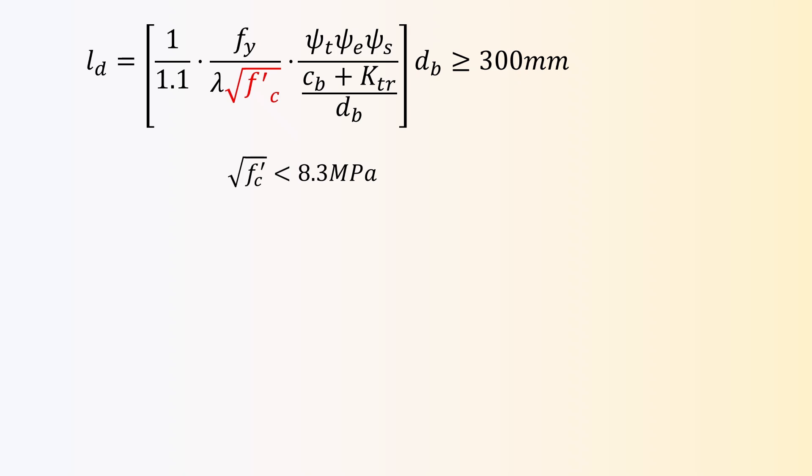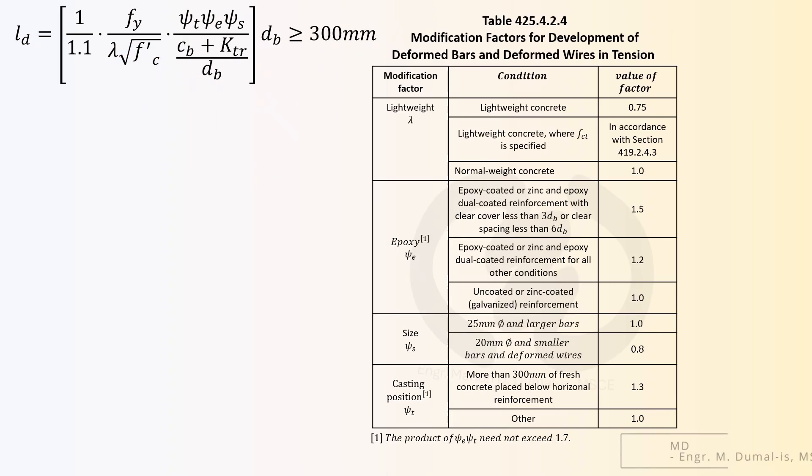Also, the quantity, the square root of the specified compressive strength, cannot exceed 8.3 MPa. In order not to overestimate the tensile capacity, in other words, if the value is more than 8.3, we use 8.3 instead. The factors were summarized under section 4.2.5.4.2.4 of the code in case you are interested in comparing it to provisions of ACI 318.